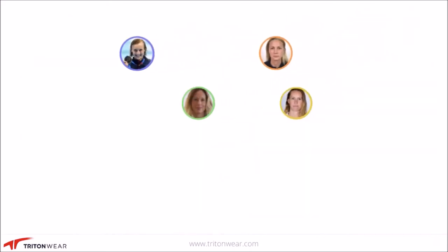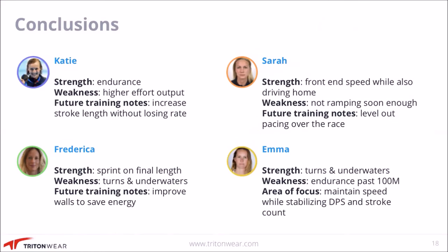This really just goes to show that different athletes have different strengths, which is why it's so critical to track your athletes and give them personalized feedback during training to reach their full potential. Katie's strength is her endurance and ability to maintain a high stroke rate for a long time without losing efficiency significantly. Her weakness is a higher energy output, and in future she could try to increase her stroke length without losing rate to increase overall efficiency. Sarah is very strong on front-end speed while also driving home well, but her weakness was that she didn't ramp it up soon enough and her pacing was variable throughout the race.